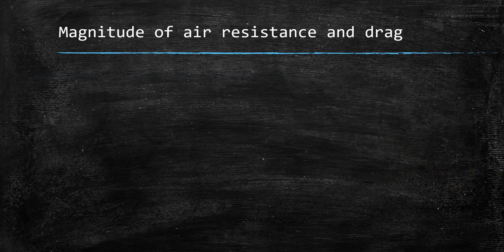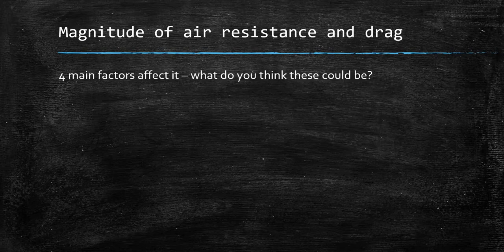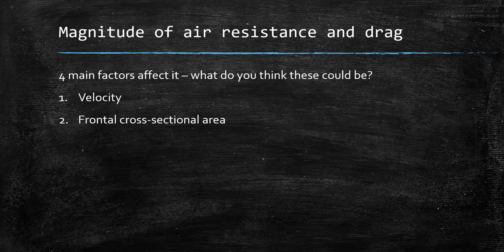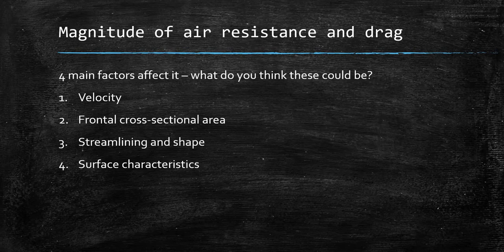We need to look at the magnitude of air resistance and drag — there are four main factors that will affect it. Pause the video and have a couple of minutes to think what those four factors might be. The first is velocity, the second is frontal cross-sectional area, the third is streamlining and shape, and the fourth is surface characteristics.